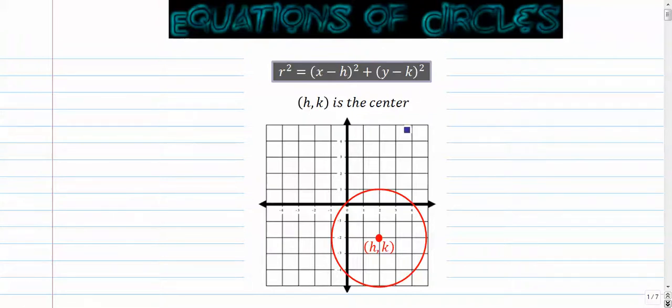So first things first, we can draw circles in the coordinate plane. When we do, we have a center h, k. Now our usual coordinate plane ordered pair is x, y. So the h is the x coordinate, the k is the y coordinate. The h tells us left and right, the k term tells us up and down.